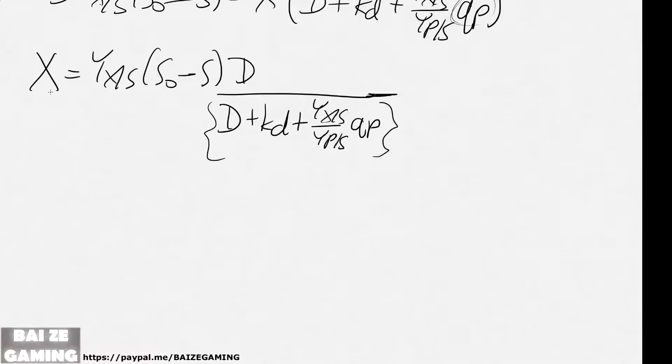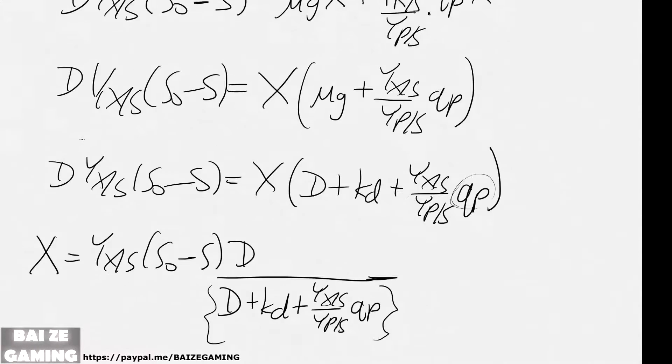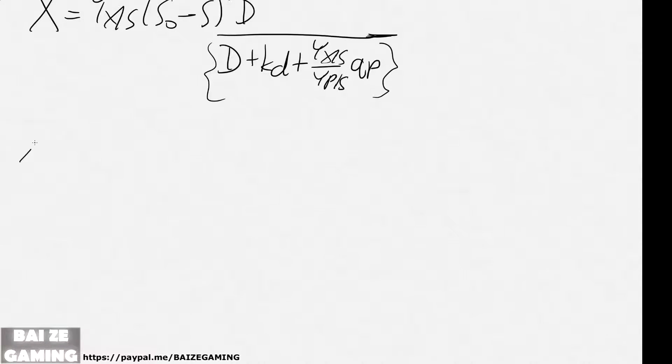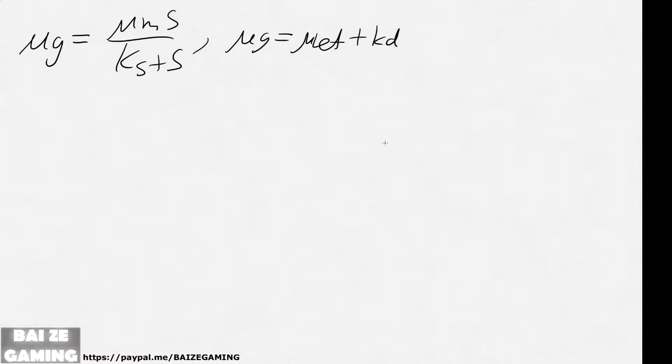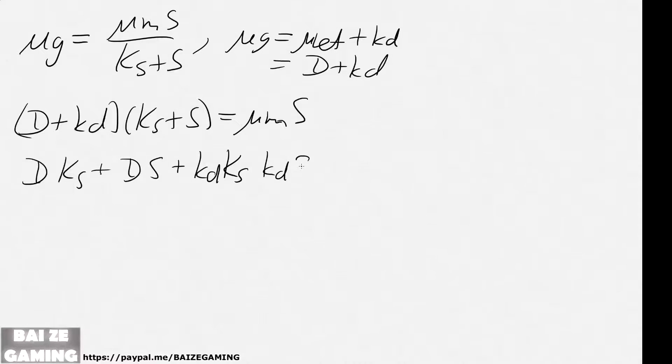There we go. So that's an equation we can get for X. We can do a P balance to get the concentration of P, but actually, let's see what we have. We can actually get S concentration from the Monod equation. Let's do that. So Monod equation is this, and the specific growth rate is net plus the cell maintenance coefficient, which equals D plus KD. And we want to get it in terms of S. This actually ends up kind of being messy, but we can distribute this around.